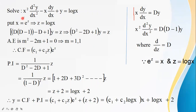Substituting these values: D(D−1) − D + 1 of y = log x. Since log x = z, simplifying gives D² − D − D + 1, which is D² − 2D + 1 of y = z.